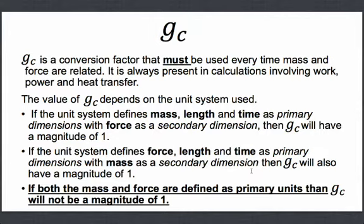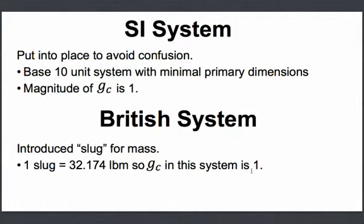In summary: if mass, length, and time are primary and force is secondary, then GC will be 1. And if force, length, and time are primary and mass is secondary, then GC will also have a magnitude of 1. The SI system was put into place to avoid all of this confusion. The SI system is a base-10 unit system with minimal primary dimensions, and the magnitude of GC is 1 for the SI system.